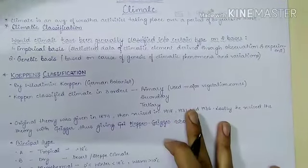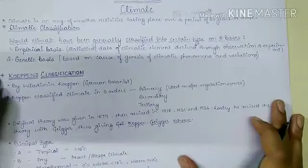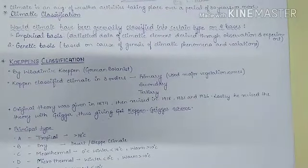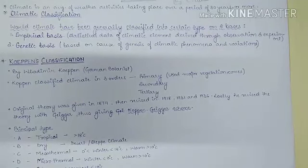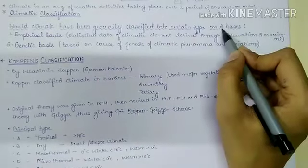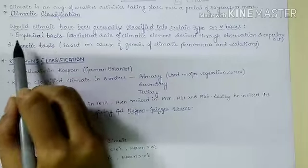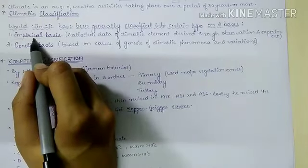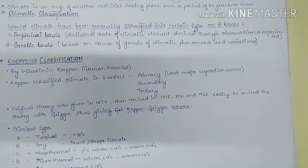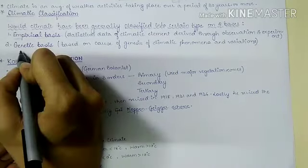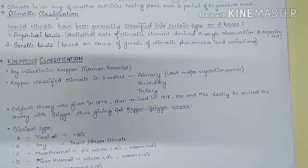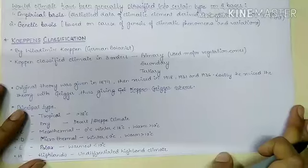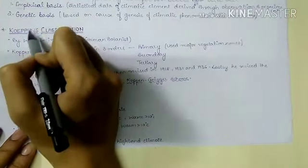Moving on to climatic classification, the full world climate is generally classified into certain types on two bases. The first basis is empirical basis, which is calculated using statistical data derived through observation and experiments. The second is genetic basis, which is based on the cause and genesis of climatic phenomena and variations.